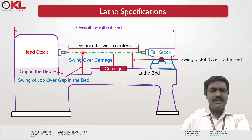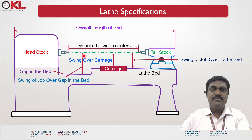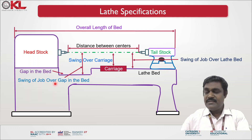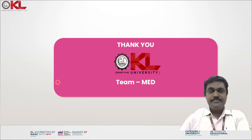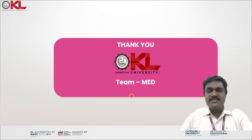One more specification is the swing of the job over the gap in the bed. This value is slightly more than the swing over the lathe bed, as the gap allows a larger maximum diameter to be accommodated for shorter length workpieces. These are the important specifications of the lathe machine.